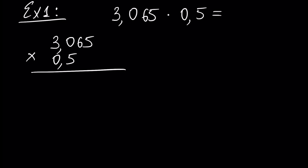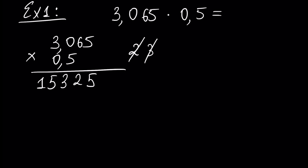We multiply 5 by 5 and it will be 25. From this 25, we write the second digit 5 and remember 2. 5 times 6 is 30, and with the remembered 2, this is 32. We write 2 and remember 3. 5 times 0 is 0, and with the remembered 3, this is 3. 5 times 3 is 15. And that's all.